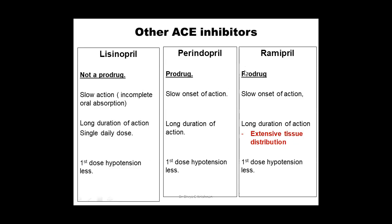Lisinopril, perindopril, and ramipril: among these, lisinopril is not a prodrug — so captopril and lisinopril are the two ACE inhibitors that are not prodrugs. All three have slow onset of action, long duration of action, require only a single daily dose, and have relatively less first-dose hypotension compared to captopril.